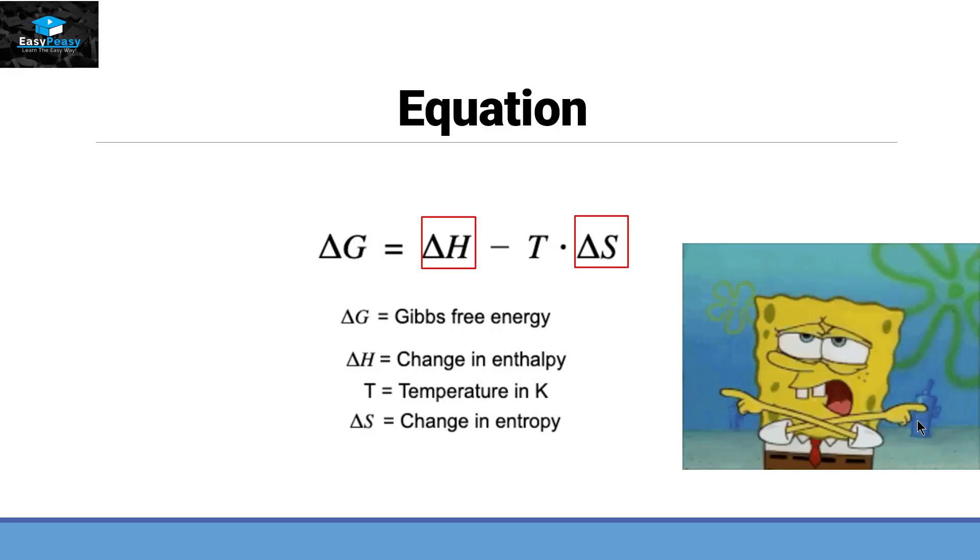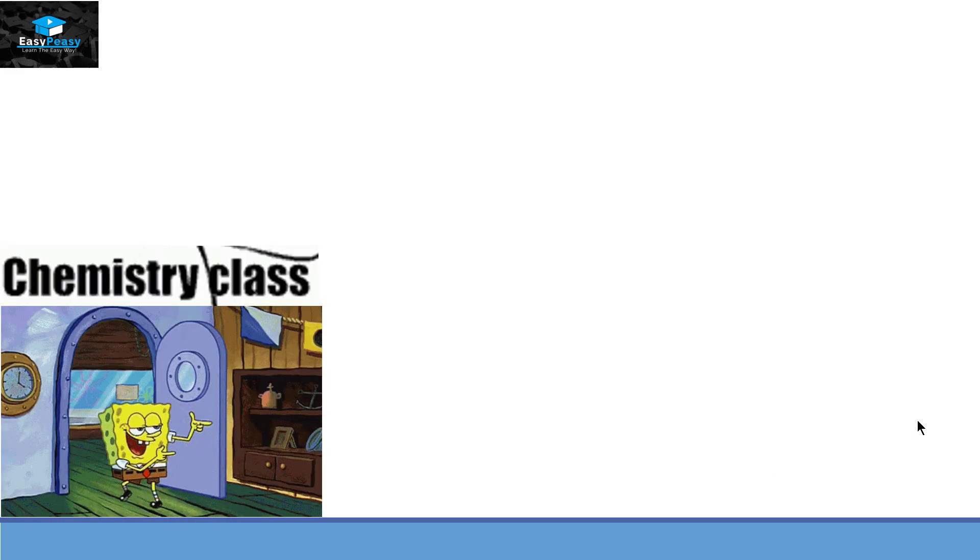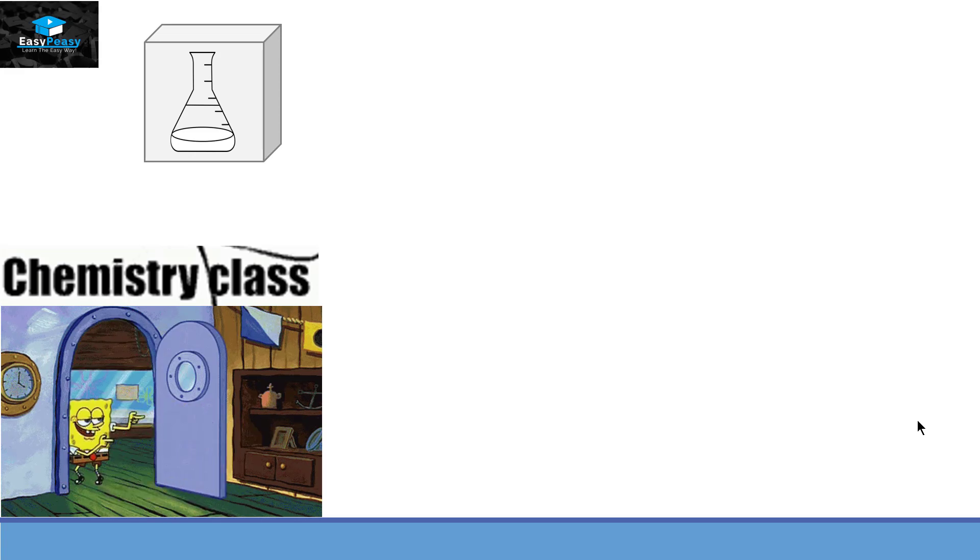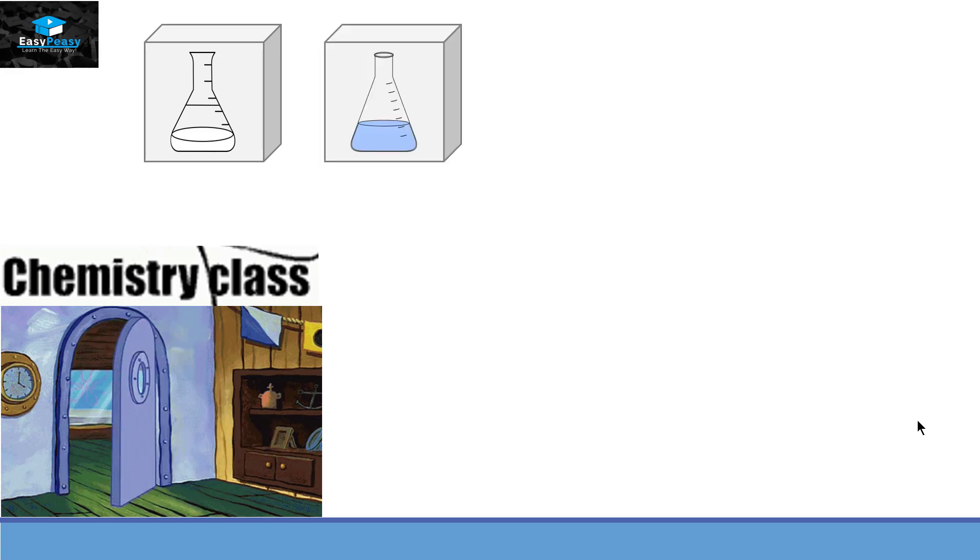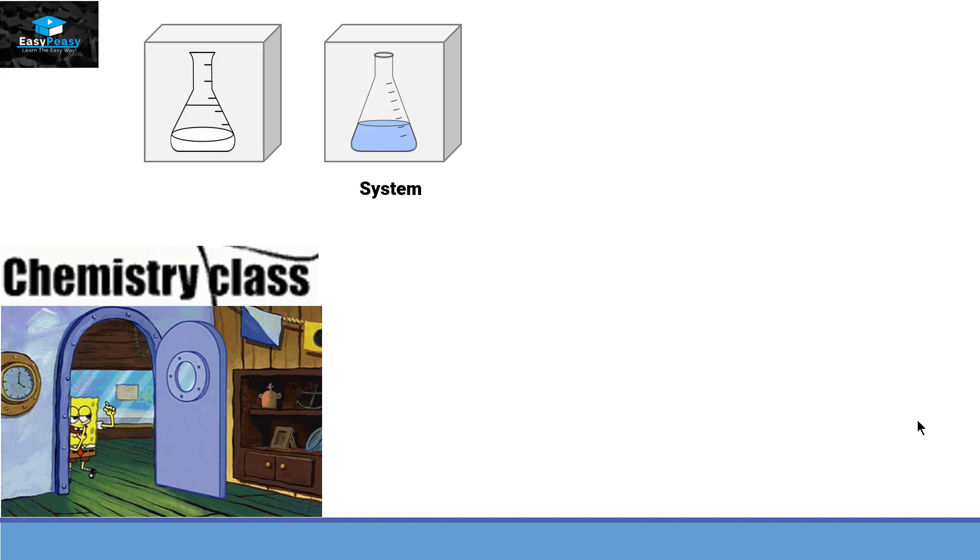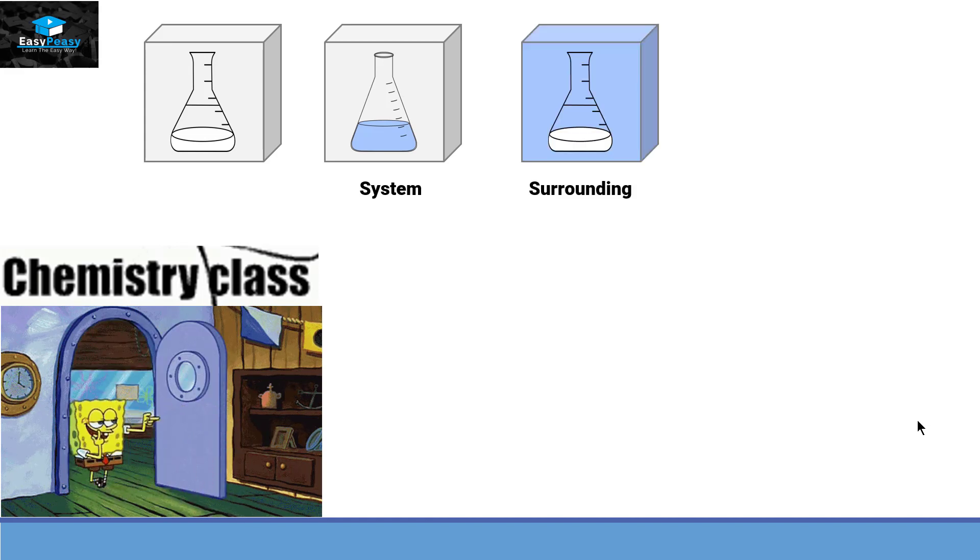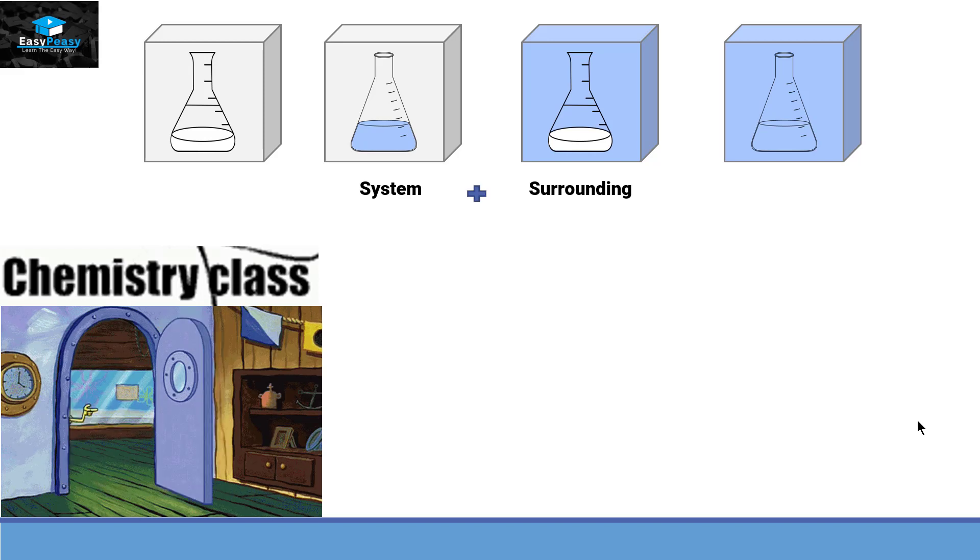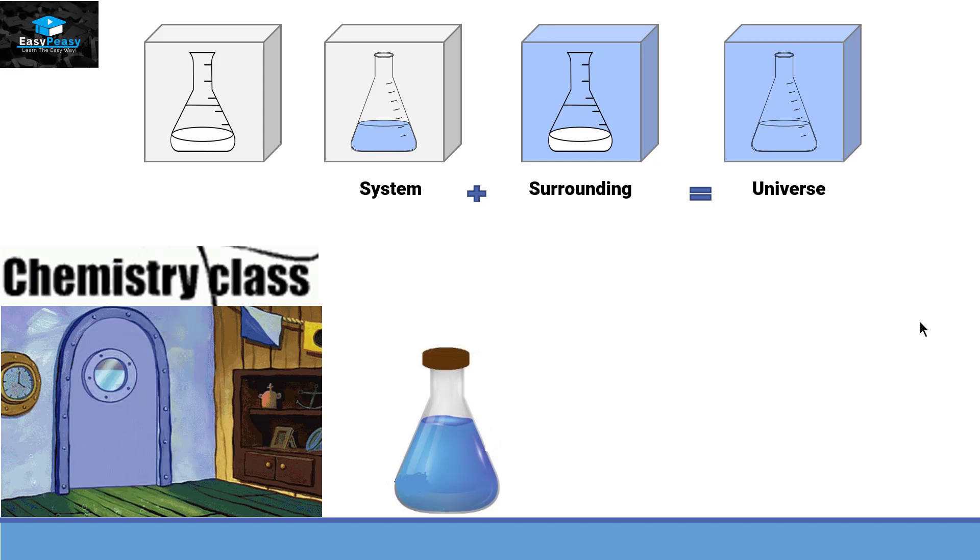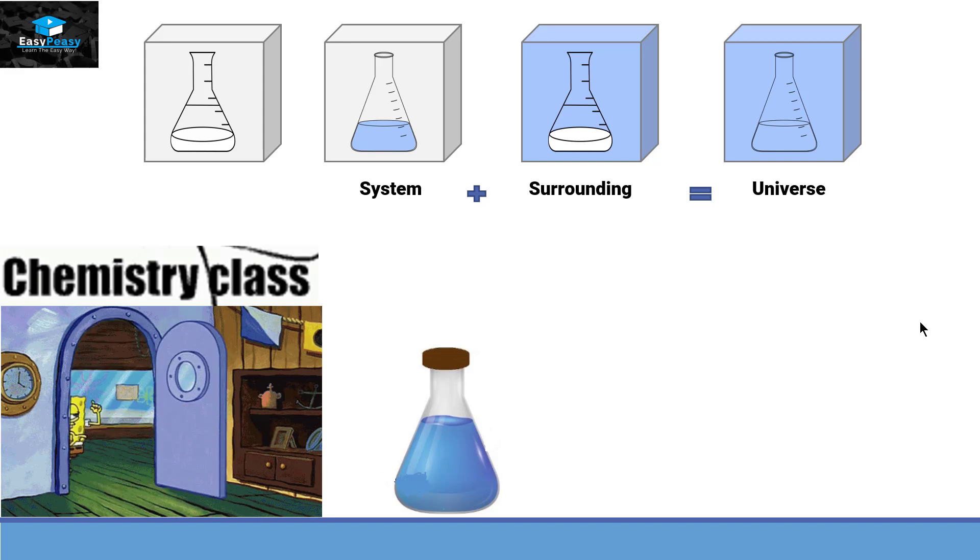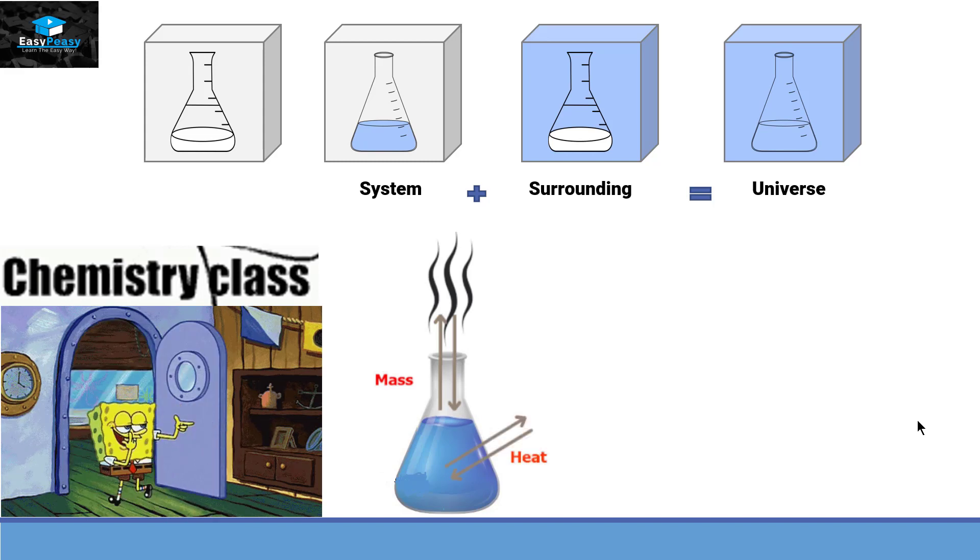In order to understand these terms, we need to go back into the chemistry class. Well, in chemistry, if we are taking a conical flask in a box, that conical flask will be a system and the box will be called the surrounding. Together, system plus surrounding will make universe. In the system, there are two things that can be exchanged from system to surrounding or from surrounding to system: the first thing is the mass or the work, and the second thing is the heat.